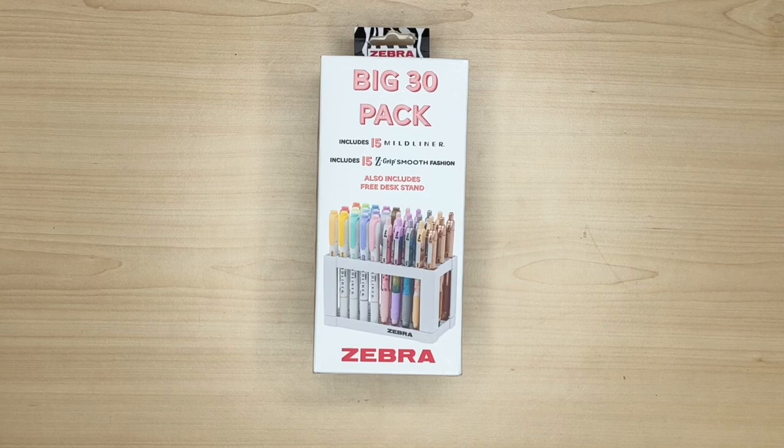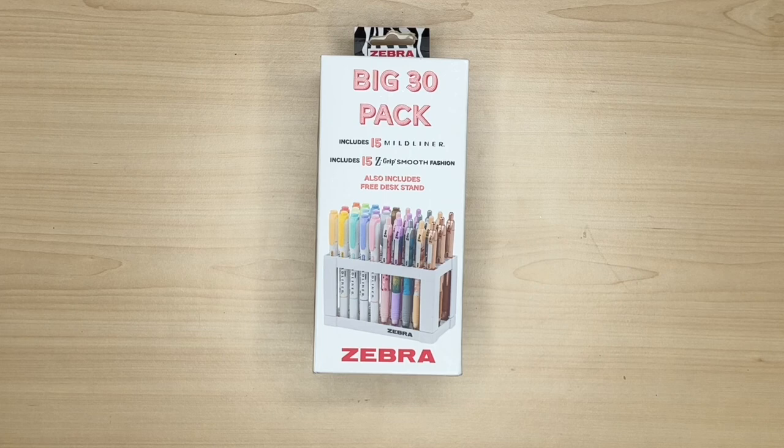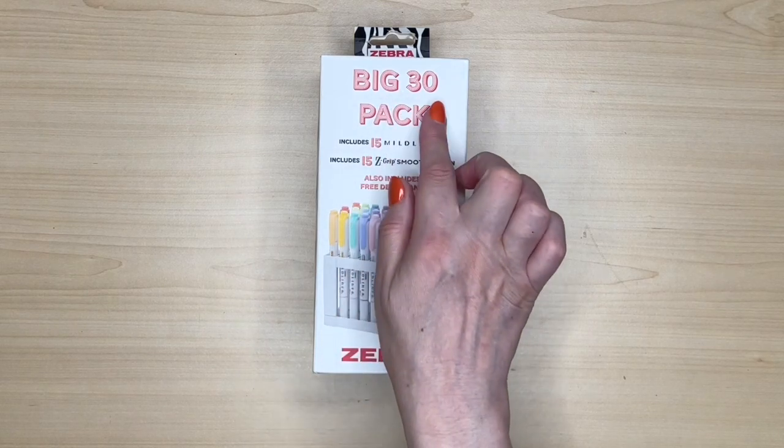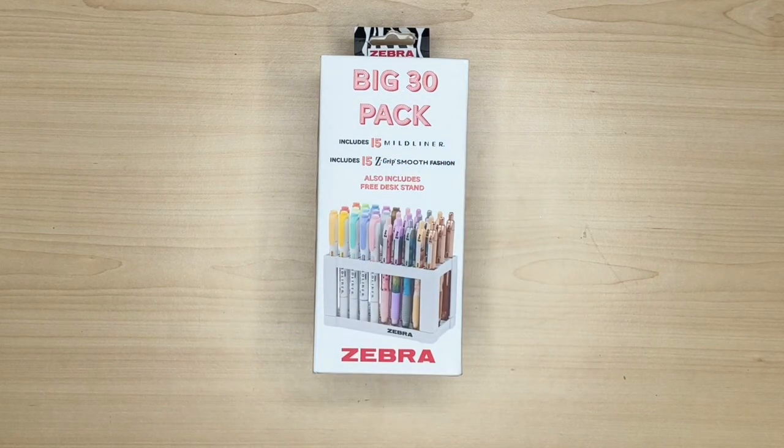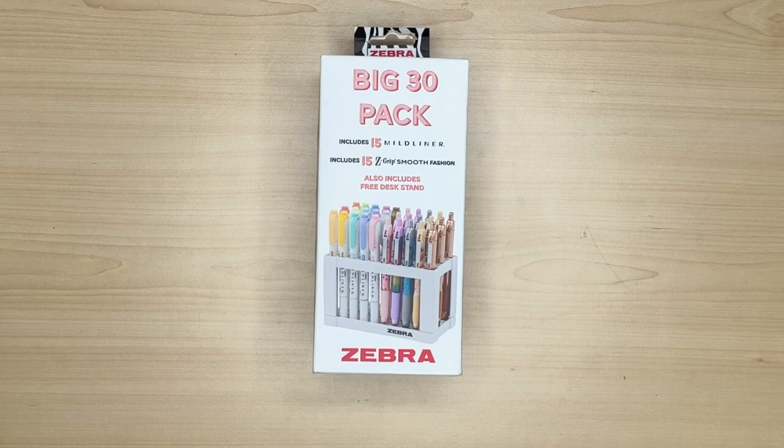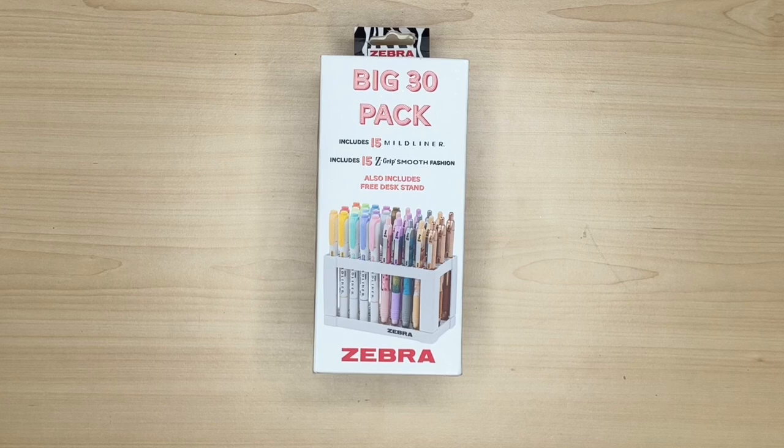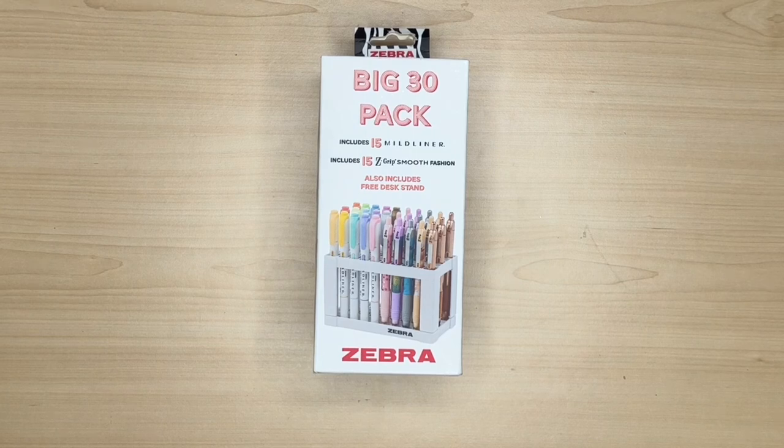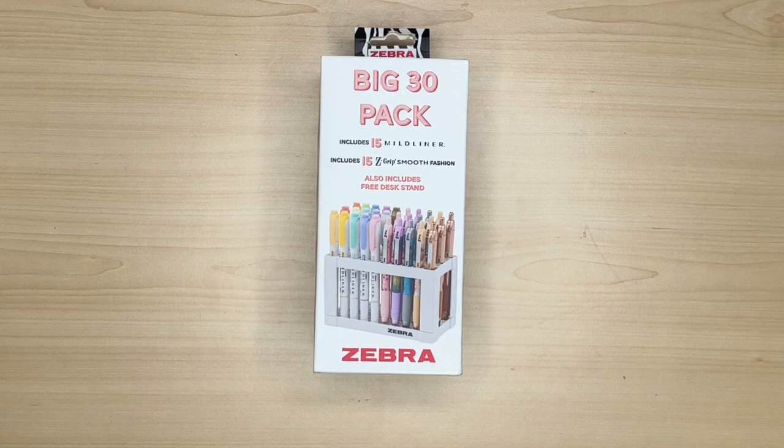I know I am really late to the party when it comes to Zebra pens, and a lot of planners have been using these for quite a while. But today here in the UK I managed to pick up this brand new release which is this Big 30 Pack, which includes 50 mildliners and 15 Z-Grip Smooth Fashion pens, and probably the thing that excited me the most, a free pen stand. So I just thought it would be fun if I unboxed it with you and did a quick pen test and gave you my thoughts.